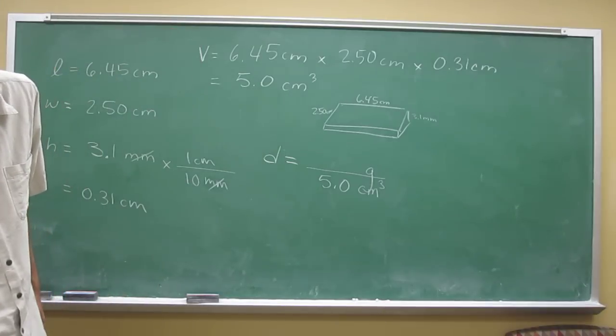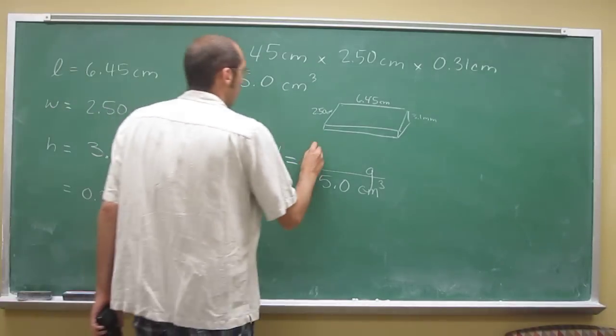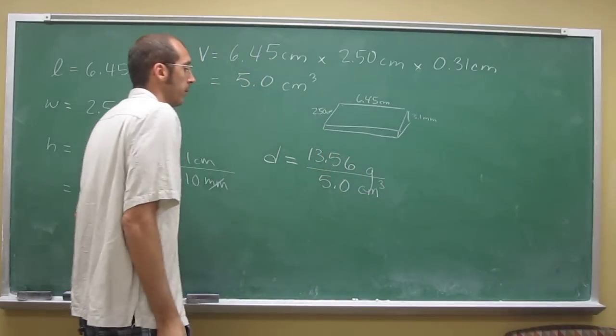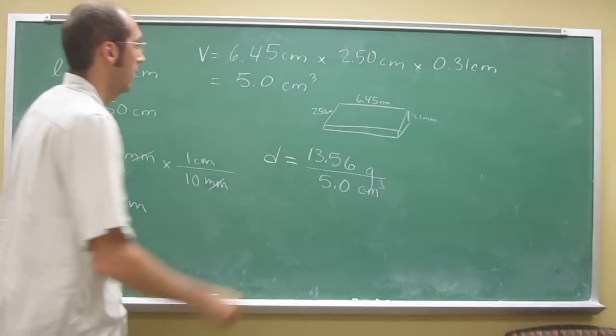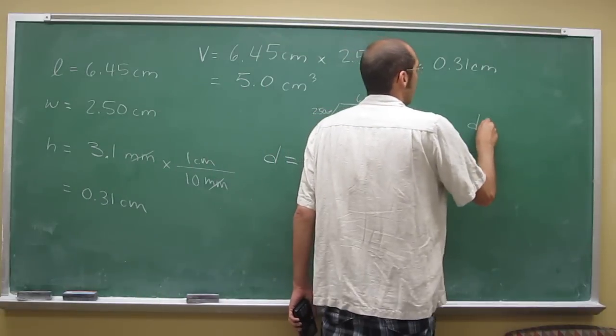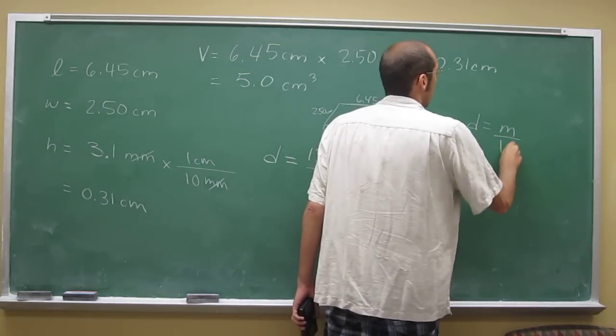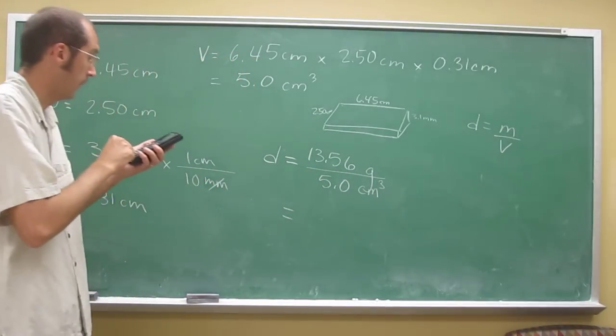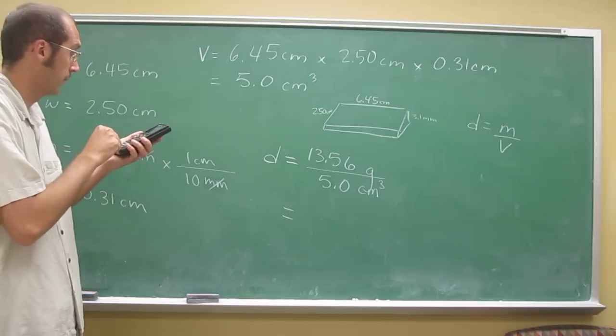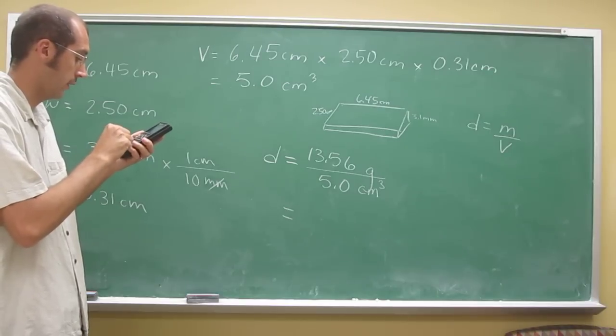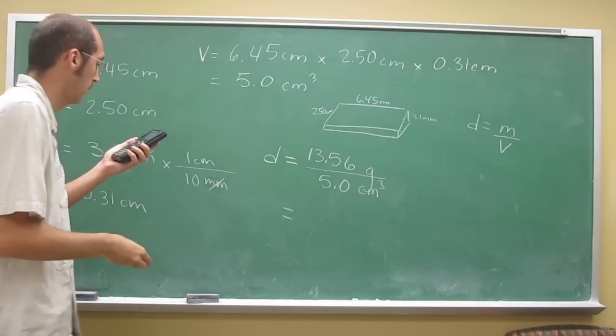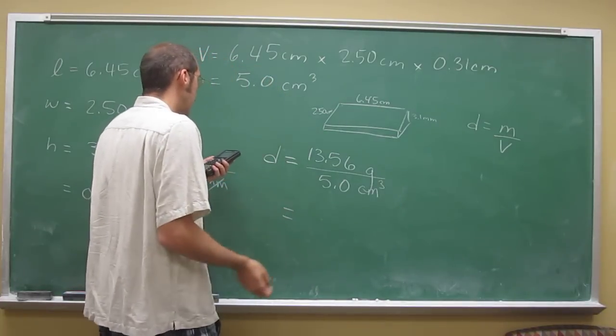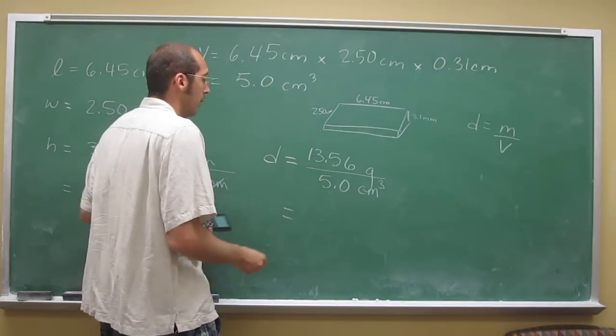The mass is 13.56 grams. If you wanted to memorize something—grams per cubic centimeter—just do that. We'll just do 13.56 divided by 5.0. I got my density as 2.712678...